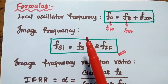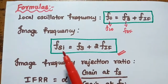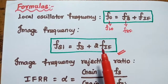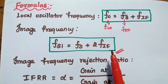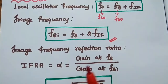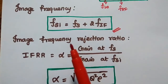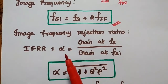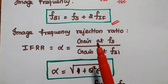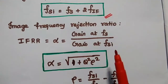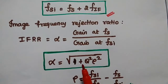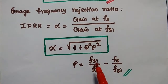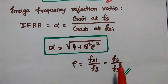The next formula is image frequency, represented as FSI, which is equal to FS plus 2 times the intermediate frequency. Next is the image frequency rejection ratio, simply IFRR, equal to alpha — the ratio of the gain at signal frequency to the gain at image frequency. Alpha equals the square root of 1 plus Q squared times rho squared, where rho equals FSI divided by FS minus FS divided by FSI.